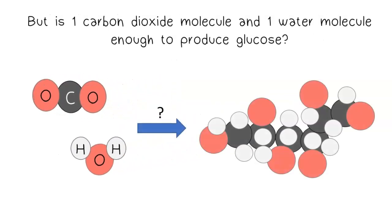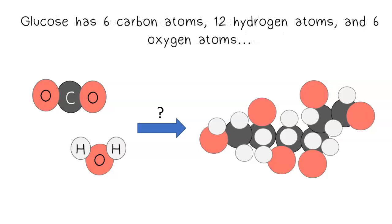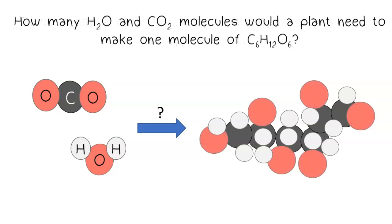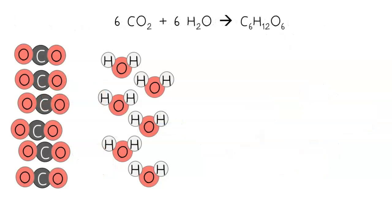But is one carbon dioxide molecule and one water molecule enough to produce glucose? Glucose has six carbon atoms, 12 hydrogen atoms, and six oxygen atoms. How many water and carbon dioxide molecules would a plant need to make one molecule of glucose? Plants would need six carbon dioxide and six water molecules.